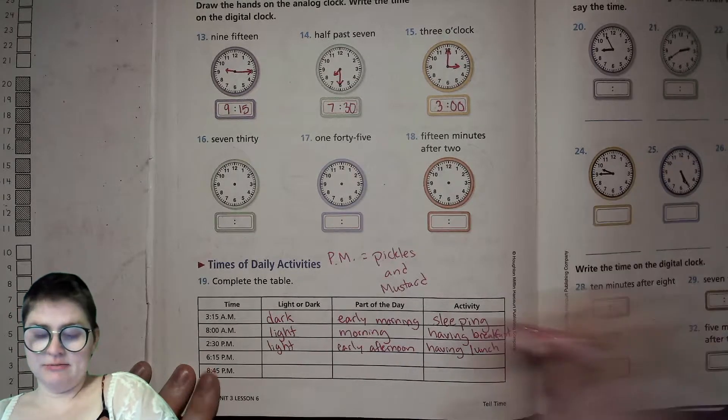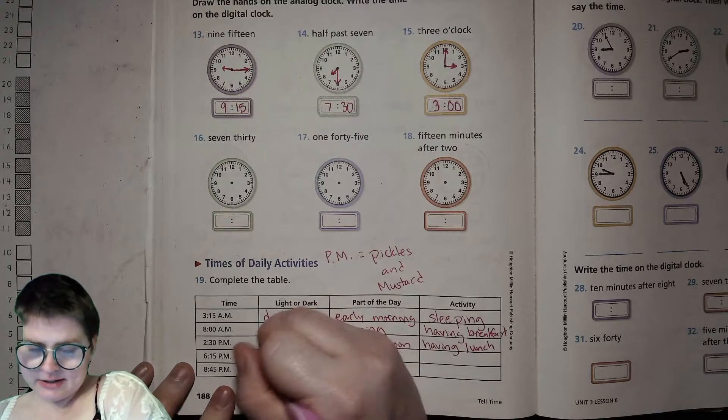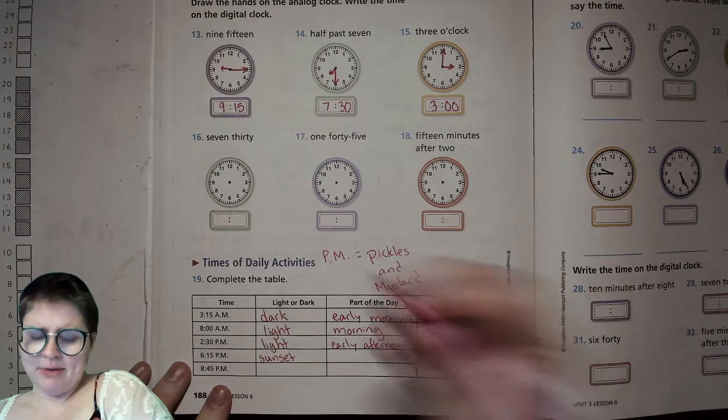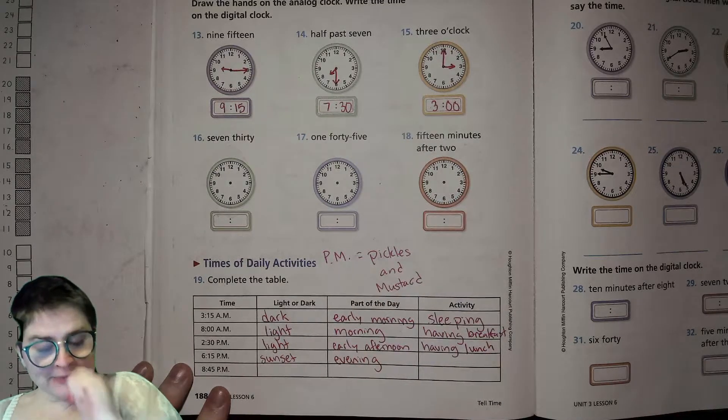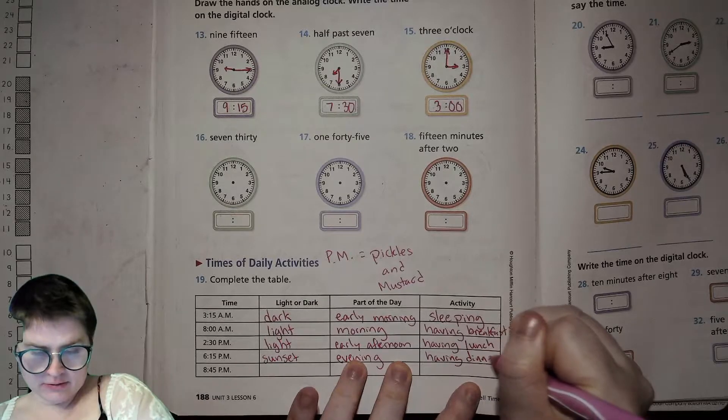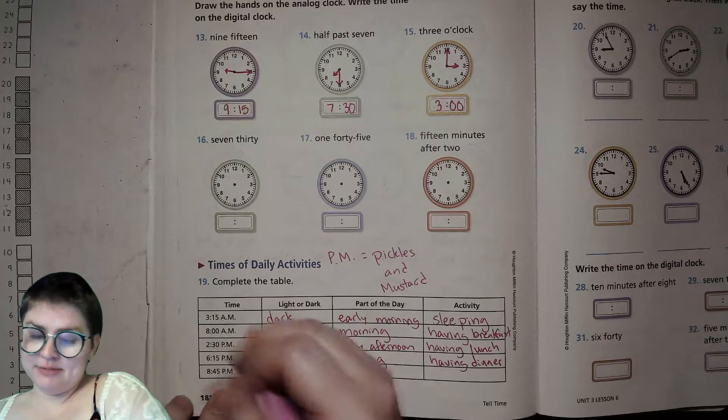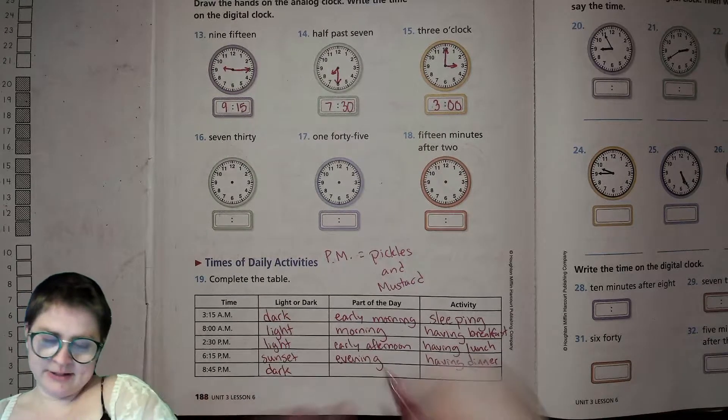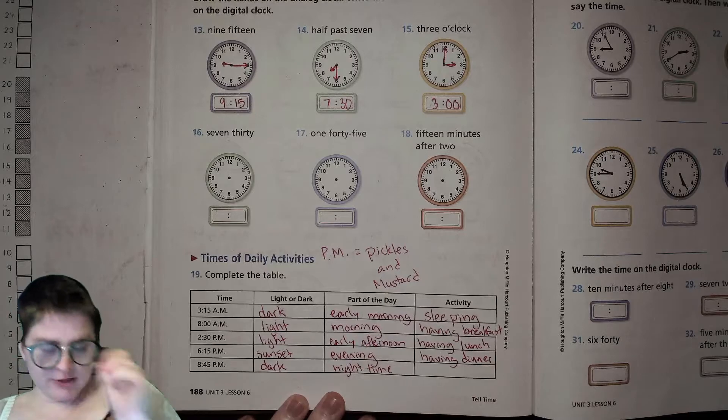6:15 pickles and mustard. You're having those hamburgers for dinner, right? So it's probably like sunset. I'm going to put sunset right here. So not quite light, not quite dark. Kind of depends on the season. Part of the day. Evening. And then activity might be having dinner. 8:45 PM. Kind of late for eating, but pickles and mustard is in the later part of the day. That is dark out. It is nighttime. An activity you might do is getting ready for bed.